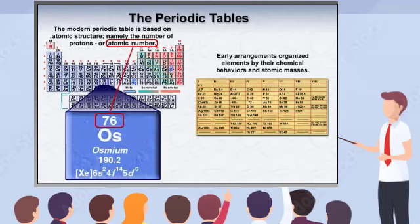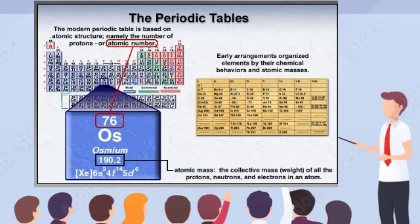You may already know that atomic mass represents the collective weight of all the protons, neutrons, and electrons in an atom. However, when atomic masses were used in developing the first periodic tables, the existence of the particles in the nucleus had not yet been determined. In the next scene, you will learn how atomic masses for elements were determined before chemists had identified particles in the nucleus.